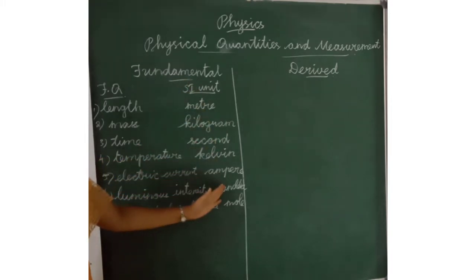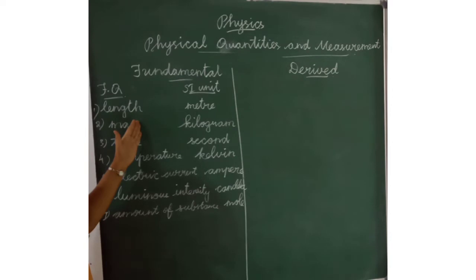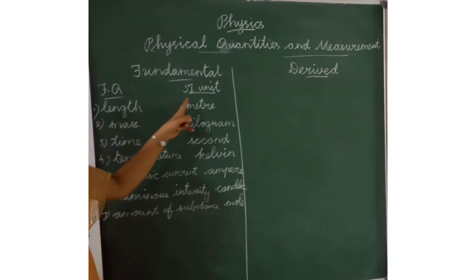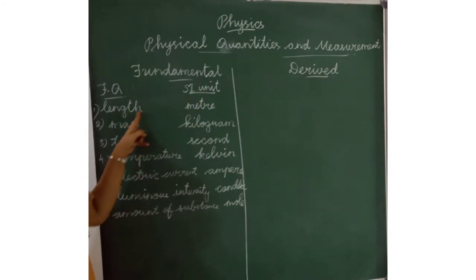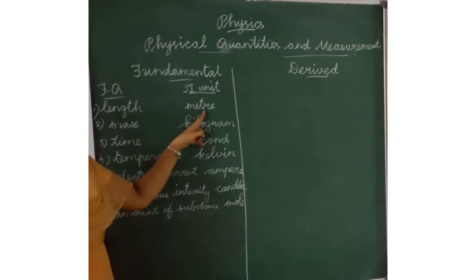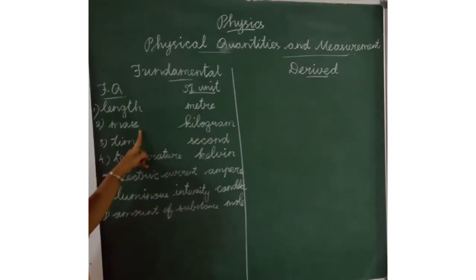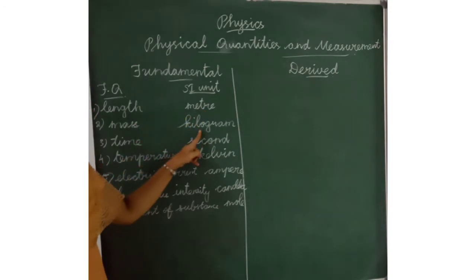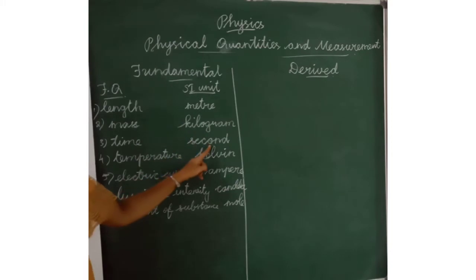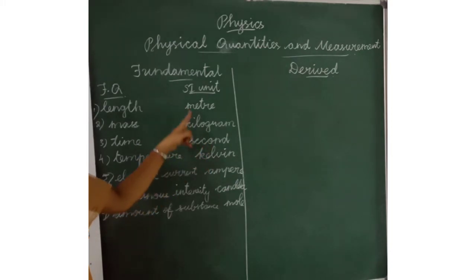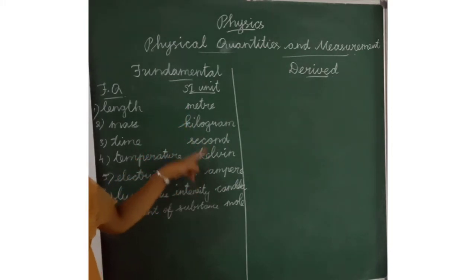These are the SI units of fundamental quantities. The SI unit for length is meter. The SI unit of mass is kilogram. The SI unit of time is second. The SI unit of temperature is Kelvin.